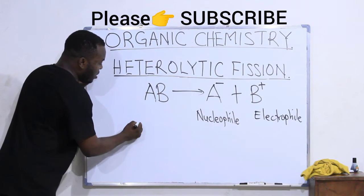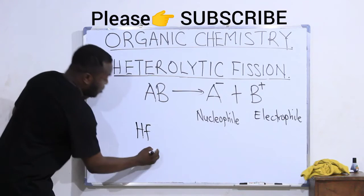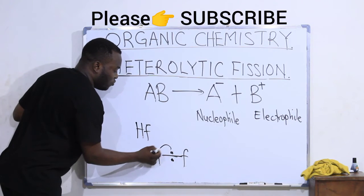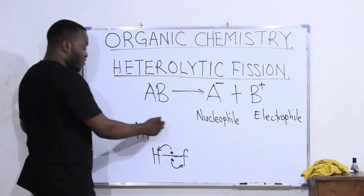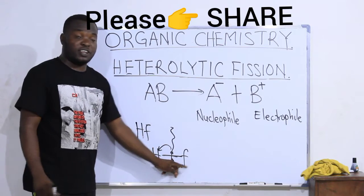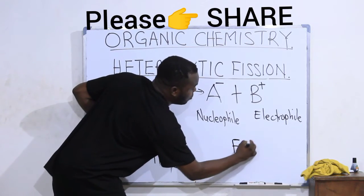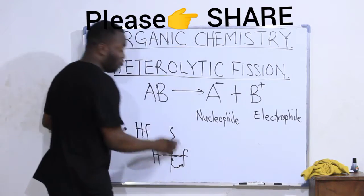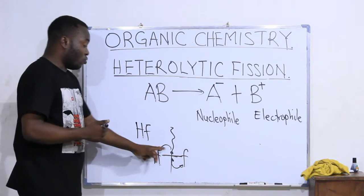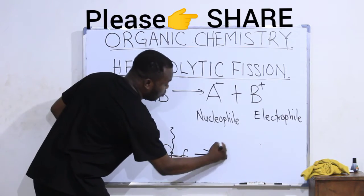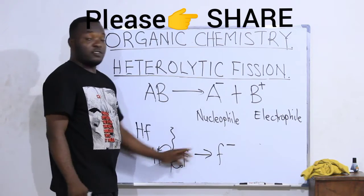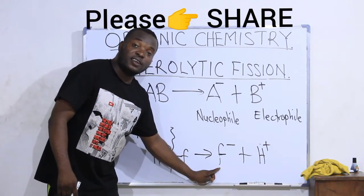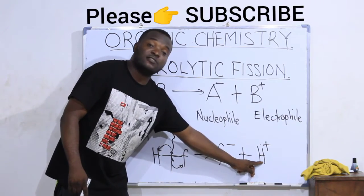For instance, if I have HF — hydrogen fluoride — and the bond between H and F is to be broken: this electron belongs to H originally, and this one belongs to fluorine. Fluorine is very electronegative. The most electronegative atoms we have are fluorine, oxygen, nitrogen, chlorine, and the other halogens. Because fluorine is very electronegative, it will tend to collect all two electrons to itself. So you have fluorine with a minus charge, meaning it has taken the two electrons, plus hydrogen that has lost an electron, giving it a positive charge. The negative charge is the nucleophile, while the positive charge is the electrophile.